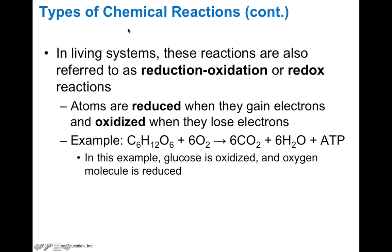In living systems, chemical reactions can be discussed in terms of redox, or reduction-oxidation, reactions. Atoms are reduced when they gain electrons and oxidized when they lose electrons. A good mnemonic is OIL RIG: oxidation is loss, reduction is gain of electrons. An example is glucose (C6H12O6) combining with oxygen to form 6 carbon dioxide, 6 water, and ATP. Glucose is oxidized — it loses electrons — while oxygen is reduced, gaining electrons. This ultimately yields ATP, which can power your body's internal mechanisms.